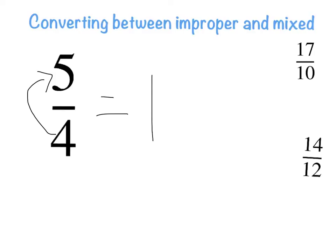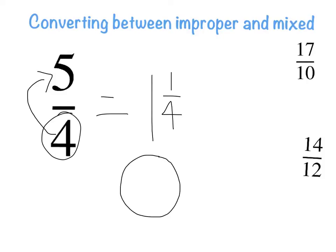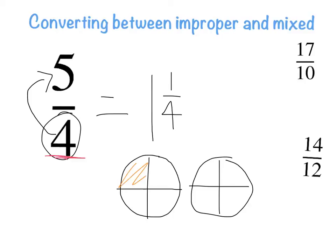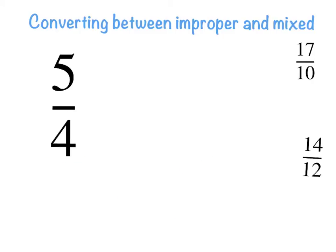Four goes into five once, with one remaining. That remainder becomes one over my original denominator — one over four. So five quarters is the same as one and one over four. Let's check: four parts make the whole, and I have five parts — one, two, three, four, five — that's one and a quarter. Yes, that looks right!